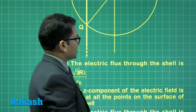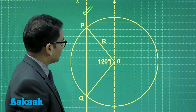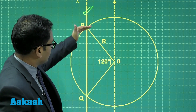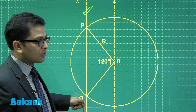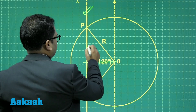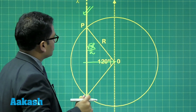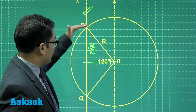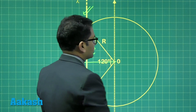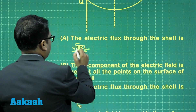Let's calculate the electric flux through the shell. Electric flux equals charge enclosed divided by epsilon naught. To calculate the charge enclosed, I need the length of the wire portion inside the shell. This is r and this is 60 degrees, so this length is r sin60 = root3·r/2, and the total enclosed length is root3·r. Therefore, charge enclosed is lambda times root3·r.